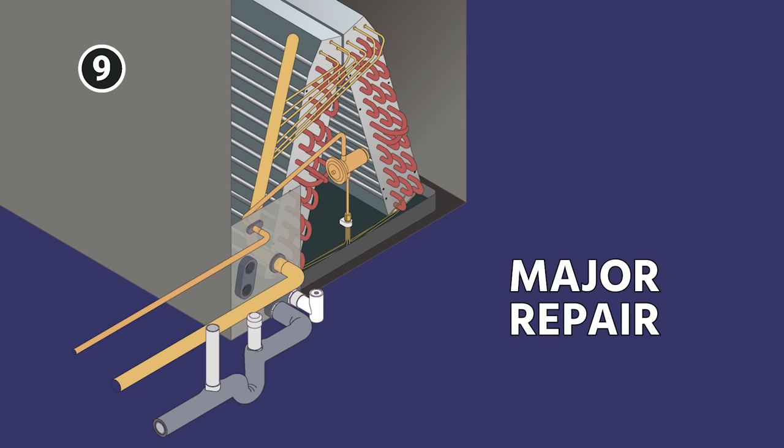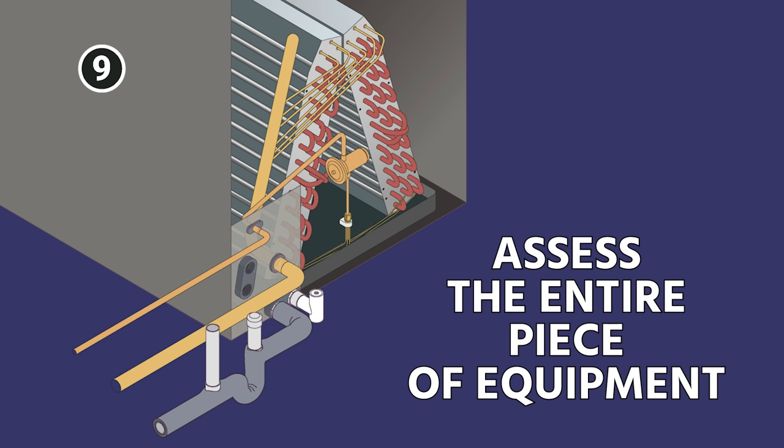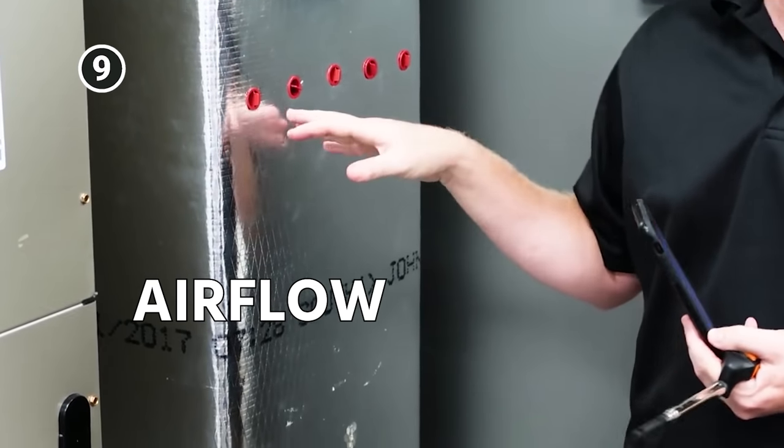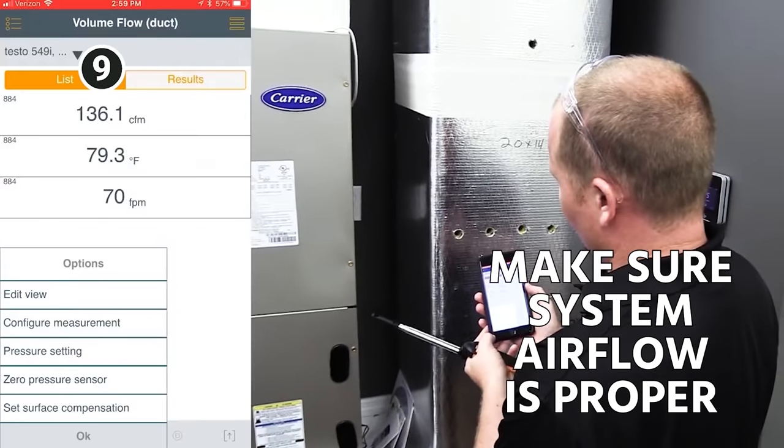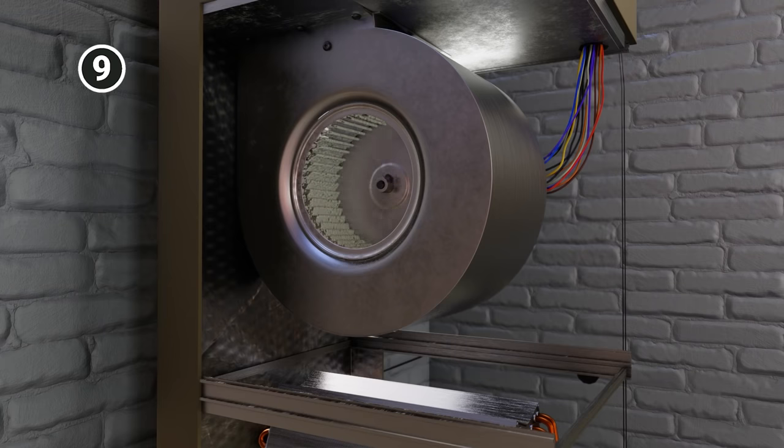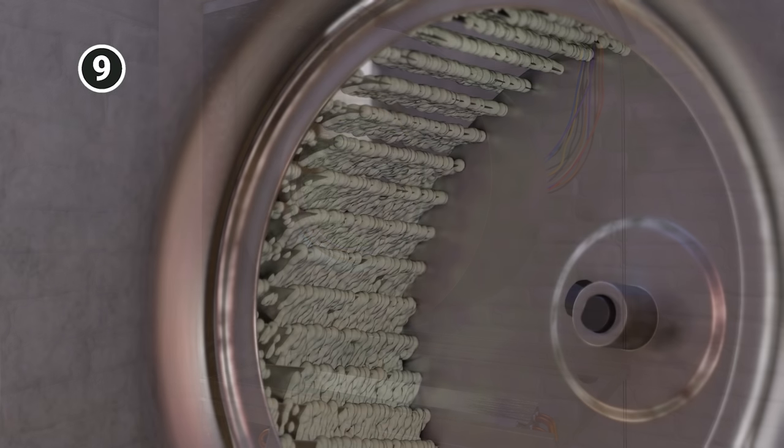Because again, when you do a major repair like an evaporator coil, presumably you replaced it because it was leaking, you have to assess the entire piece of equipment. And one of the most overlooked things is airflow. Make sure that the system airflow is proper. At the very least, make sure to do a solid visual inspection on everything else. Things like your blower wheel, as an example.